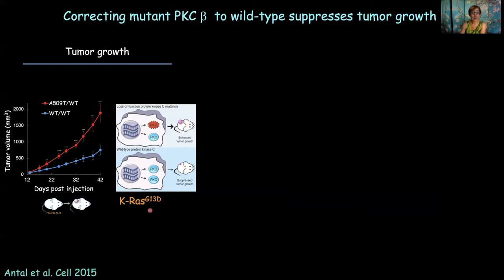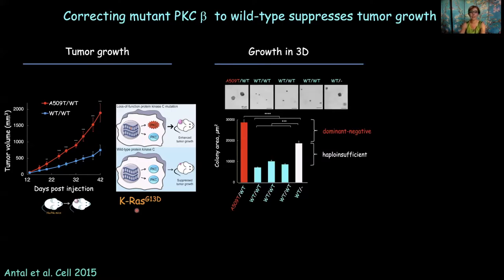It's very relevant that this colon cancer cell line had many other mutations, most strikingly an oncogenic mutation in KRAS. So even in the context of oncogenic KRAS, having good PKC was sufficient to suppress this oncogenic potential. When Corina looked at growth in 3D, she found that correcting bad PKC to good PKC significantly decreased growth in 3D. The wild-type PKC was haploinsufficient — having one allele of PKC was not as good at controlling cell growth as having two. On top of that, if one allele has an inactivating mutation, it acts in a dominant-negative fashion.